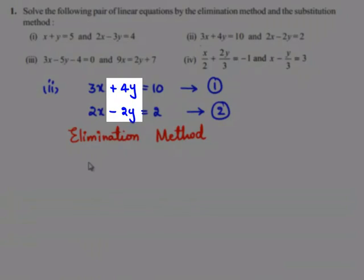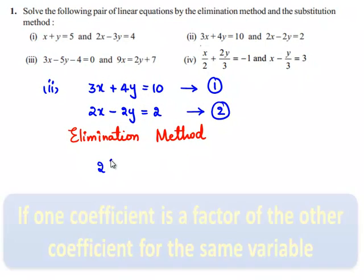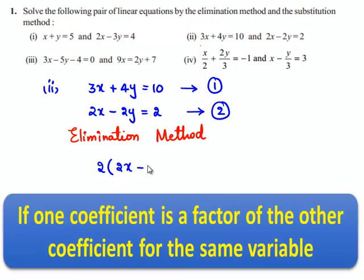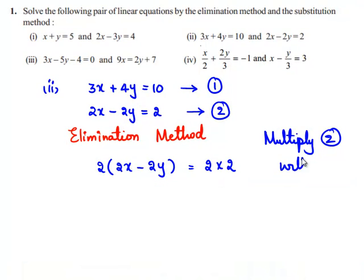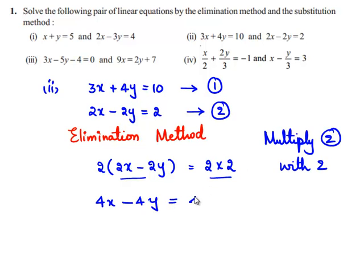The second equation can be written as 2 times of 2x minus 2y is equal to 2 multiplied by 2 — that is, multiply equation number 2 with 2. So 2 multiplied by 2x minus 2y is equal to 2 times of 2. This gives 4x minus 4y is equal to 4. Let this be equation number 3.